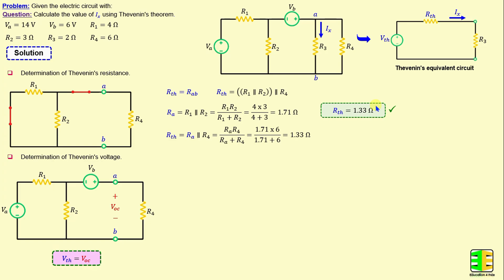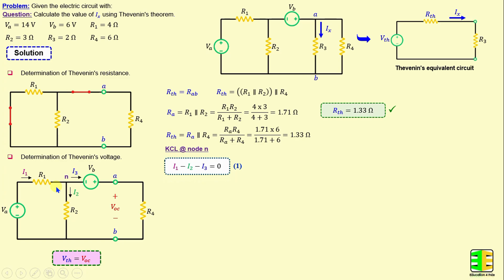To find the open circuit voltage VOC, I will apply Kirchhoff's laws. I1 is the current through resistor R1 and I2 is the current through resistor R2. By applying Kirchhoff's current law at node N, we can write: I1 minus I2 minus I3 equals 0. Applying Kirchhoff's voltage law in loop 1: negative VA plus R1 times I1 plus R2 times I2 equals 0.